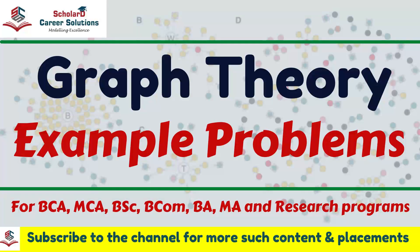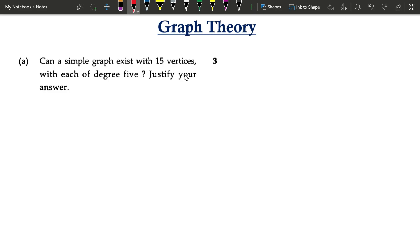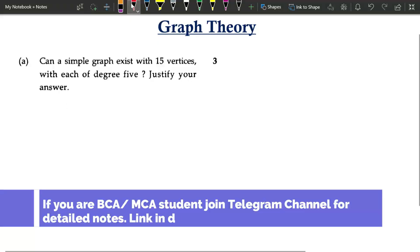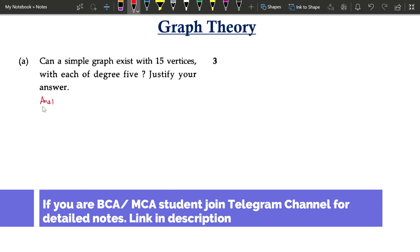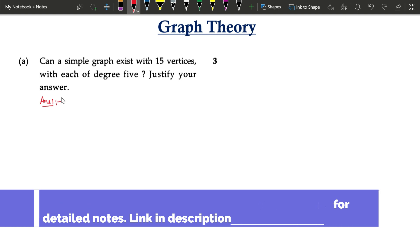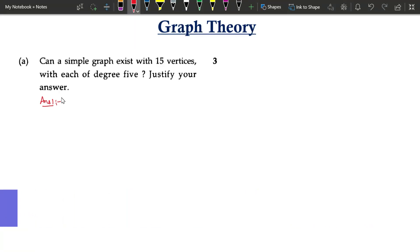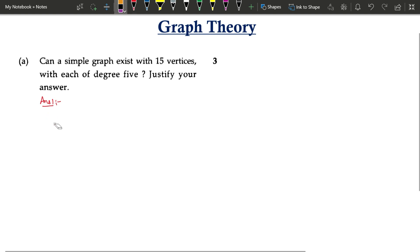In this video we'll see how to solve some graph problems with solutions. The first question is: can a simple graph exist with 15 vertices each of degree 5? The answer is no. The first theorem we can quote is that the number of vertices with odd degree should be even. Here each vertex has degree 5, so we have 15 vertices all with odd degree, meaning we have an odd number of vertices with odd degree, which is not possible.